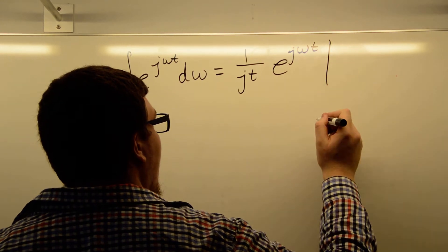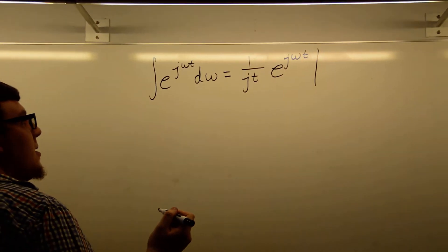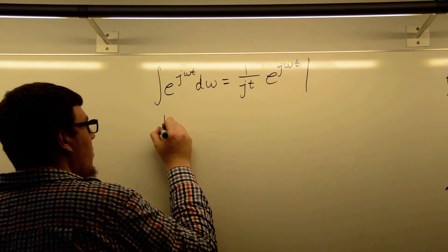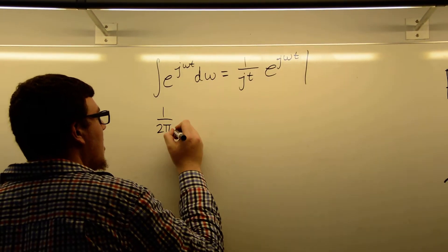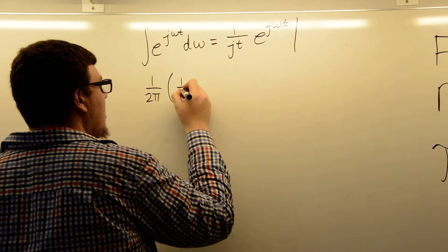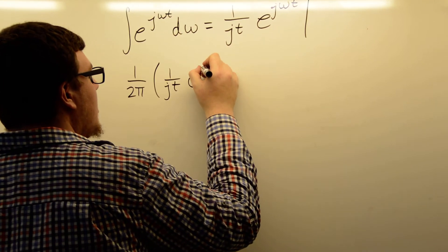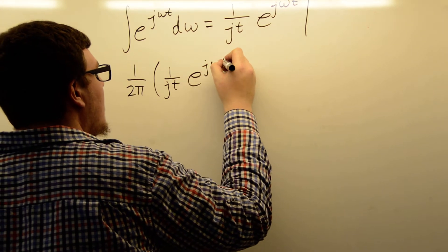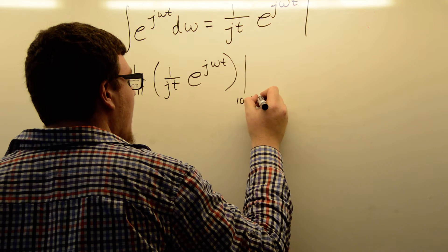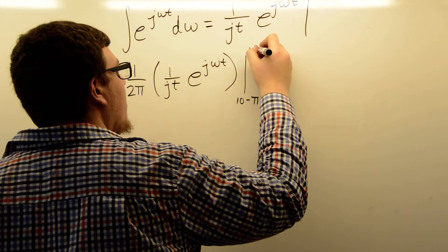We evaluate at those bounds. So if we plug in for our function, we get 1 over 2π times 1 over jt, e to the jωt, evaluated from 10 minus π to 10 plus π.